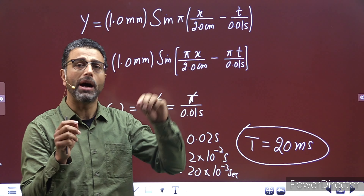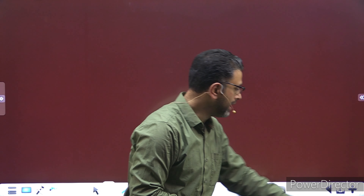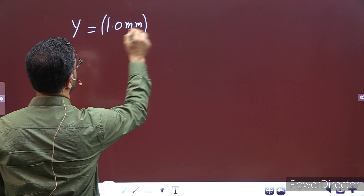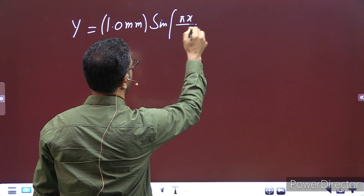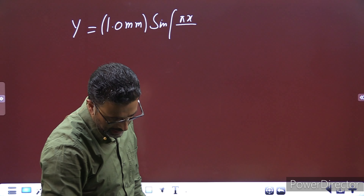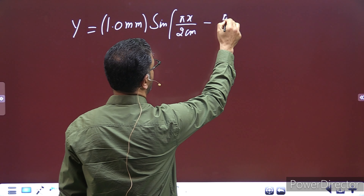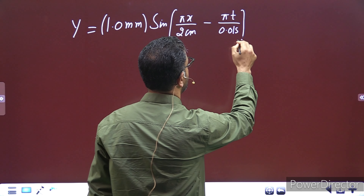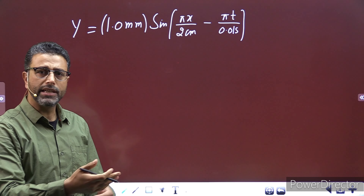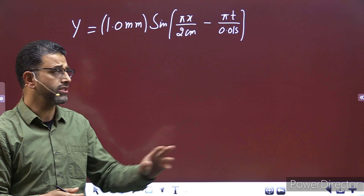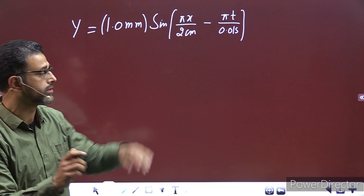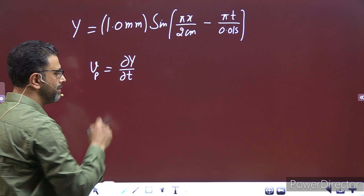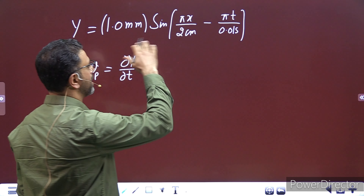यहाँ पर दो variables हैं: x और t, तो हमें partial differentiation करनी होगी with respect to time। So y हमारा है: 1.0 mm × sin(πx/2 cm − πt/0.01 seconds)। यह हमारी particle की displacement है। Particle velocity vp = partial y / partial t।